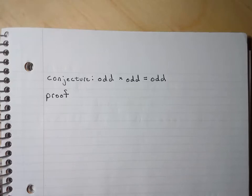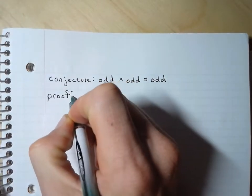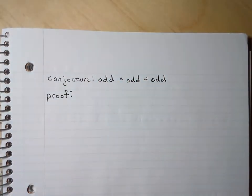So here's another sample proof. Sooner or later I'm going to ask you to write one of these on your own. Conjecture is that odd times odd equals odd.